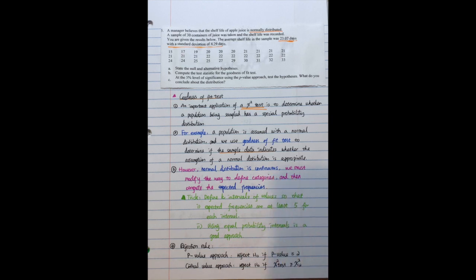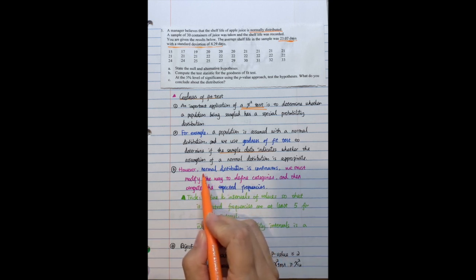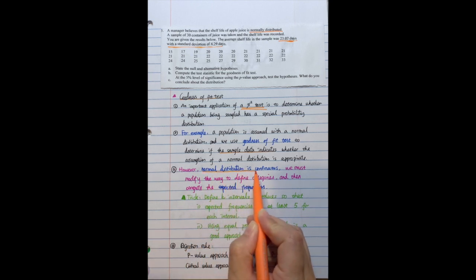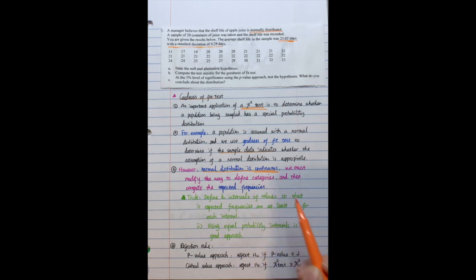However, if you still remember chi-square test, we use it to do the categorical variable test. But normal distribution is continuous. As far as we know, that's normal distribution table. Let me just draw a graph of normal distribution table. This is the curve of normal distribution and we notice it's continuous.